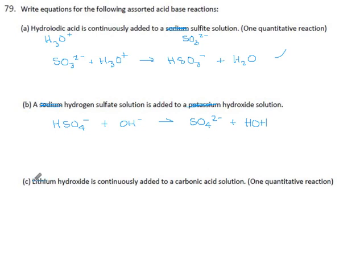Lithium hydroxide, the lithium ions don't matter, we just get hydroxide from that, is continuously added to carbonic acid, which is H2CO3. So this is an acid that can give away a hydrogen, the OH will take one and become HOH. And with this, this gives away one hydrogen, it becomes the hydrogen carbonate ion.